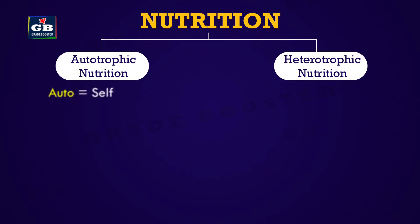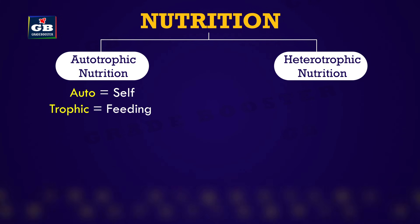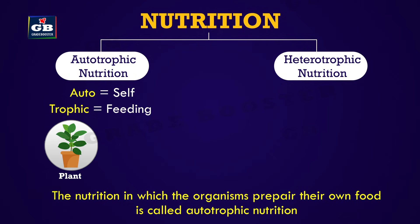Auto means self, tropic means feeding. So the nutrition in which the organisms prepare their own food is called autotrophic nutrition. Examples include green plants and some bacteria.